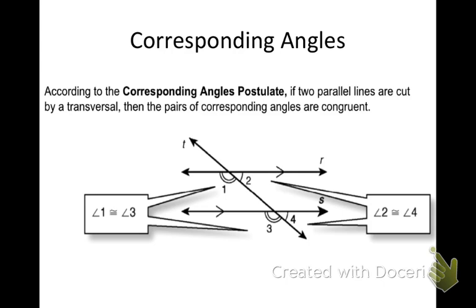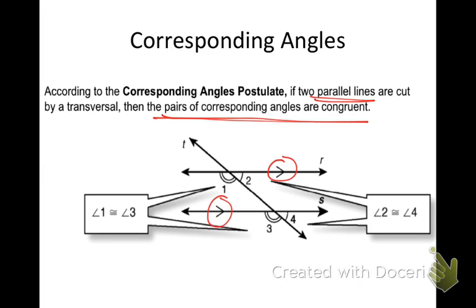The first one we're going to start off talking about is corresponding angles. According to the corresponding angles postulate, if two parallel lines are cut by a transversal, then the pairs of corresponding angles are congruent. Arrows indicate parallel lines. If I have two parallel lines, the corresponding angles are congruent.